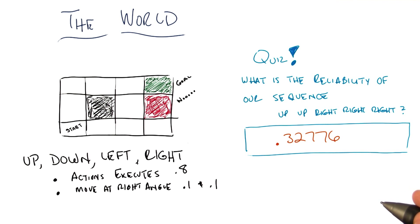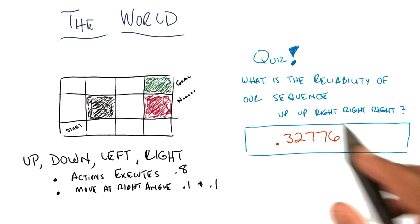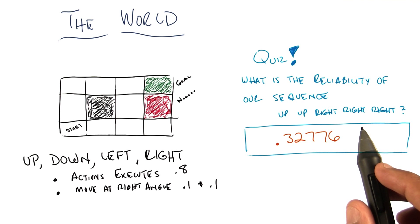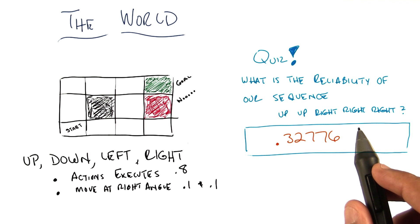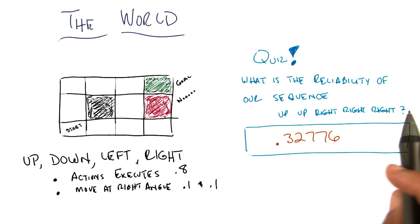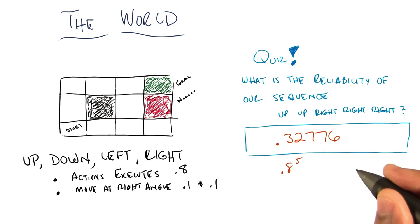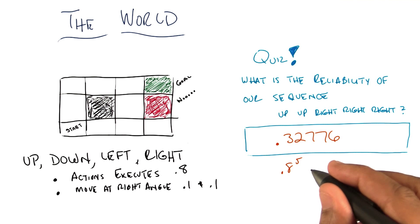Okay, well, show me what you did. All right, so the first thing I did is I said, okay, well, this is not so hard because from the start state, if I execute up, up, right, right, right — each of those things works the way it's supposed to independently with probability 0.8.